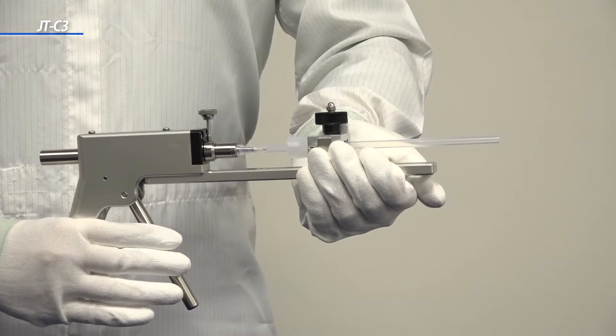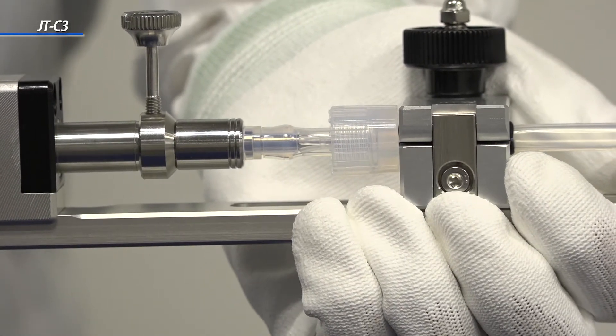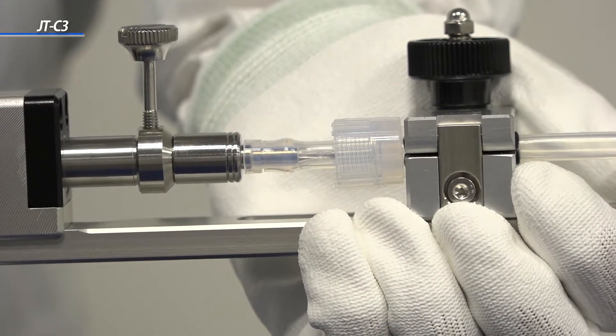Then, squeeze the lever to move the sleeve holder forward. The sleeve is fully inserted when the tube reaches the stopper on the sleeve.